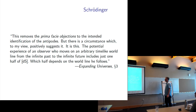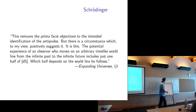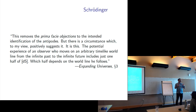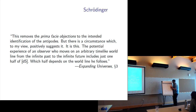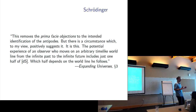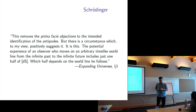Schrödinger's argument: the potential experience of an observer who moves on an arbitrary timelike world line from the infinite past to the infinite future includes just one half of de Sitter spacetime — which half depends on which world line he follows. Remember, if we think about all the places we could go, that's everything we could signal. For any observer, no matter where they start or what path they follow, it's always half of de Sitter spacetime they can reach from the beginning of time. Schrödinger thinks that's weird, and thinks it would be much cooler if everybody had access to the whole spacetime as their potential future experiences.